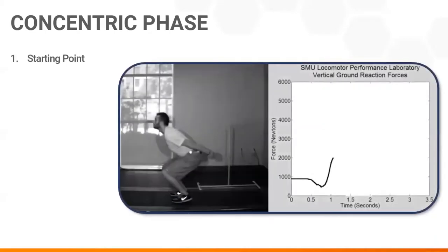Now, this is a very simple phase. An athlete starts at zero velocity at the bottom of the squat and applies force into the ground to extend upward.